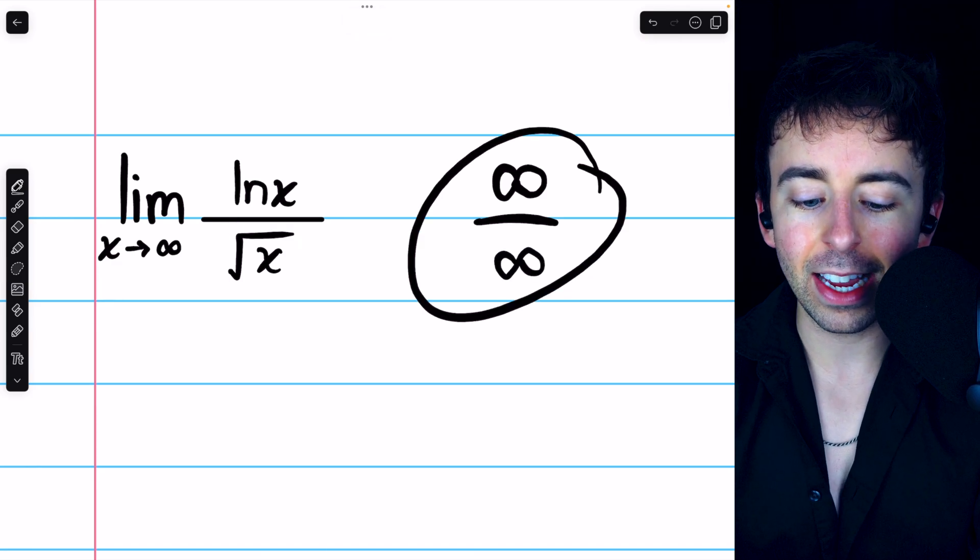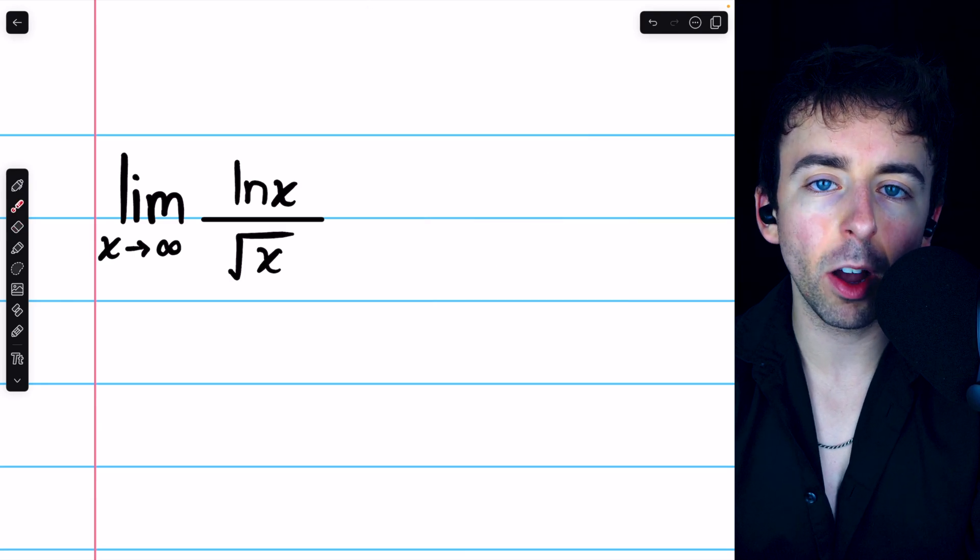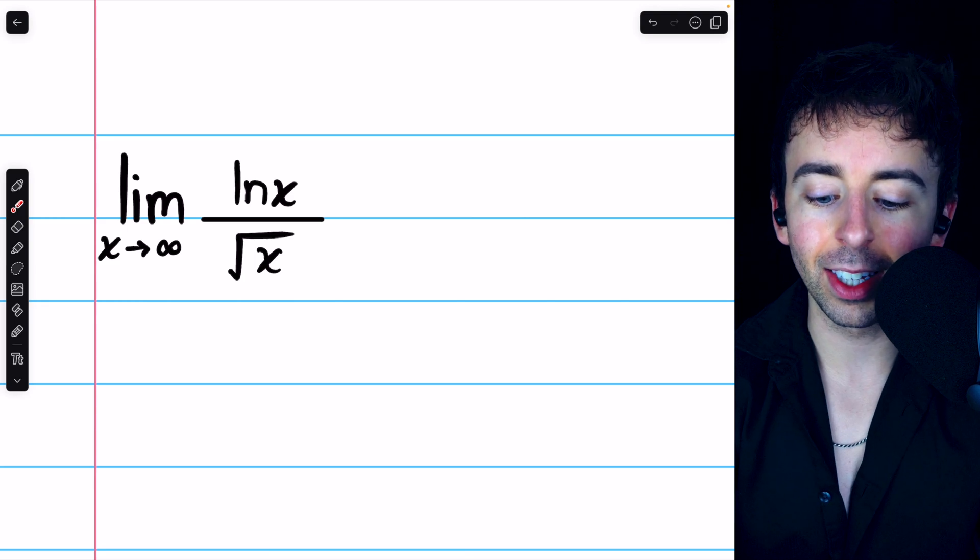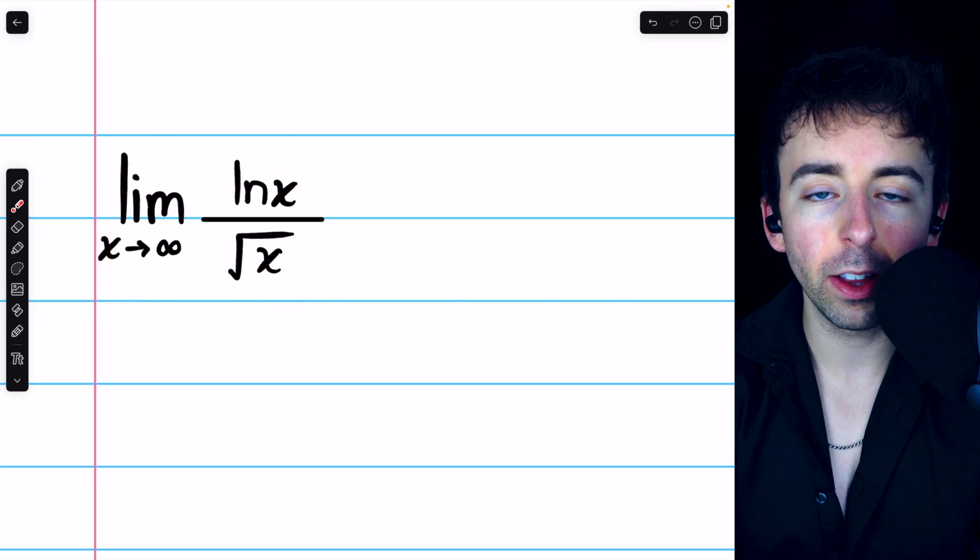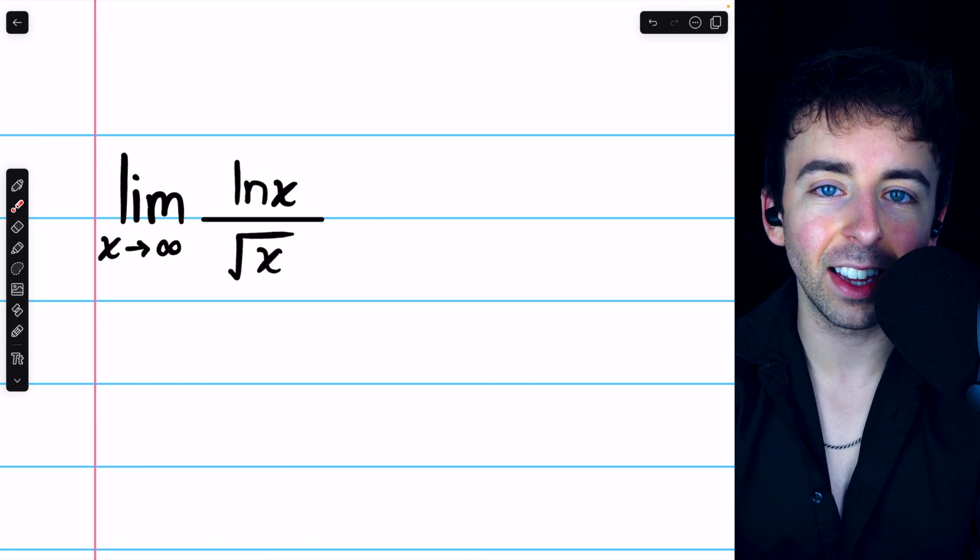So this limit is in an indeterminate form, which means we can evaluate it using L'Hopital's rule, which tells us that the limit of this quotient of functions will equal the limit of the quotient of their derivatives, provided it exists.